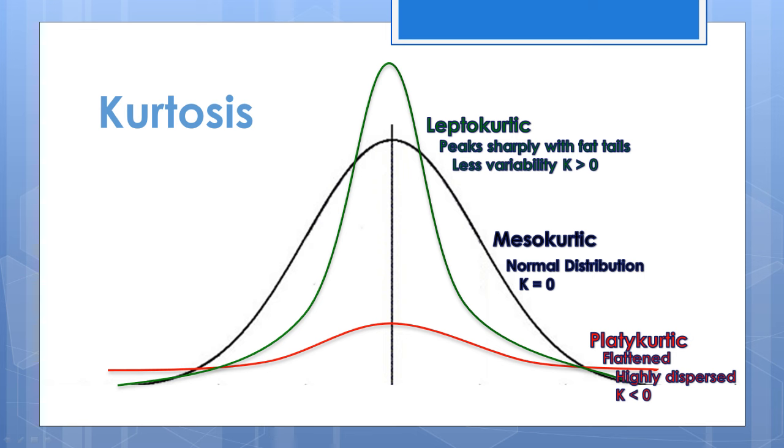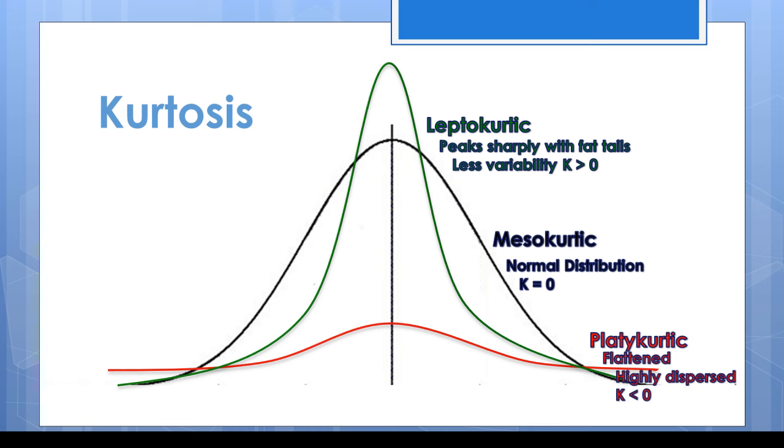Using Fisher's measure of kurtosis, a normal distribution would receive a coefficient of zero and be called mesokurtic. If the calculation of excess kurtosis results in a large positive number, the distribution is too peaked to be considered normal.